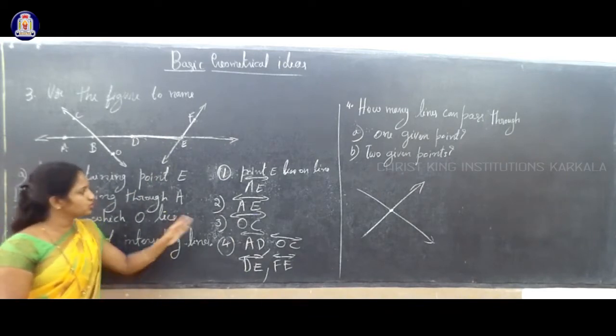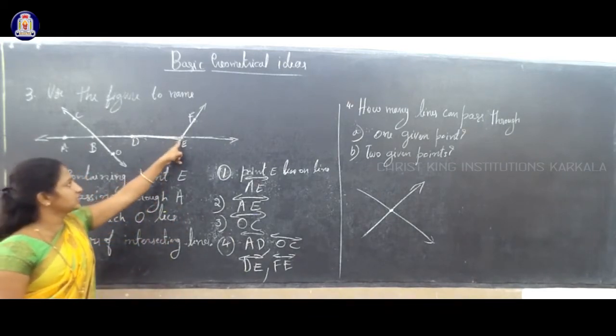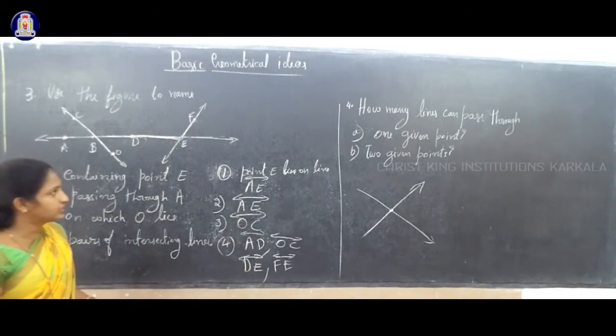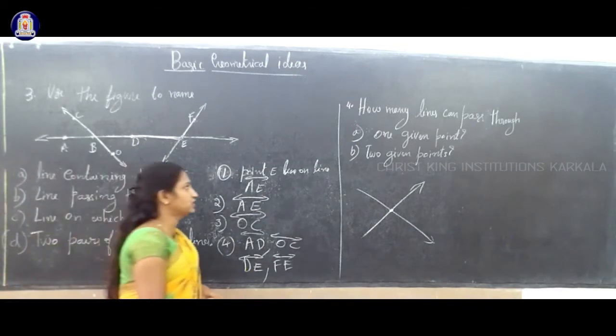So a pair of intersecting lines in this figure: one is AD and OC. These two lines are intersecting. Similarly, DE and FE are intersecting lines, and these two lines intersect at point E.